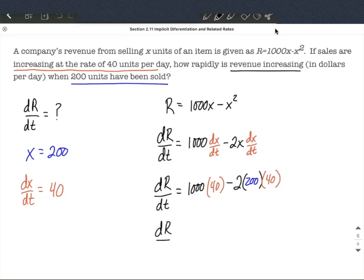So final answer here, dR/dt is going to be 40,000 minus 2 times 200 times 40 is going to be 16,000, which works out to be 24,000.